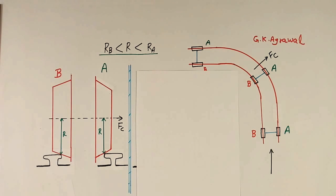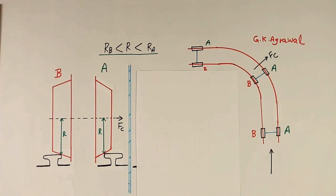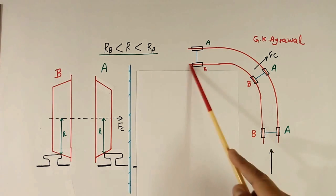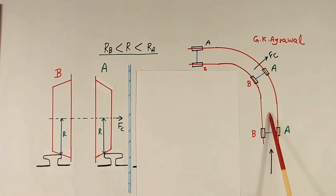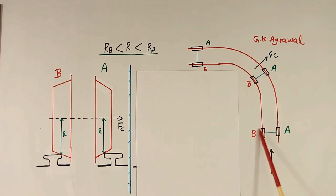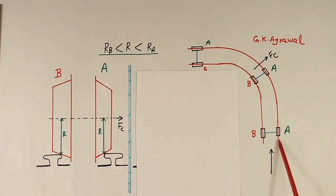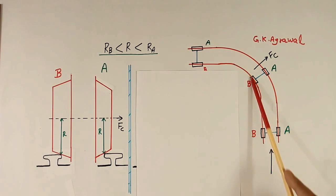Just now I told 3 things: cone shape, wheel travel depending upon diameter or radius, and centrifugal force. Now let us see how we use all these 3. Suppose this is the track and the train is going from this side and taking a left turn. This train has two wheels, A and B, both connected with an axle. Because the train is turning left, this distance is longer, so A has to travel a longer distance and B has to travel a lesser distance.